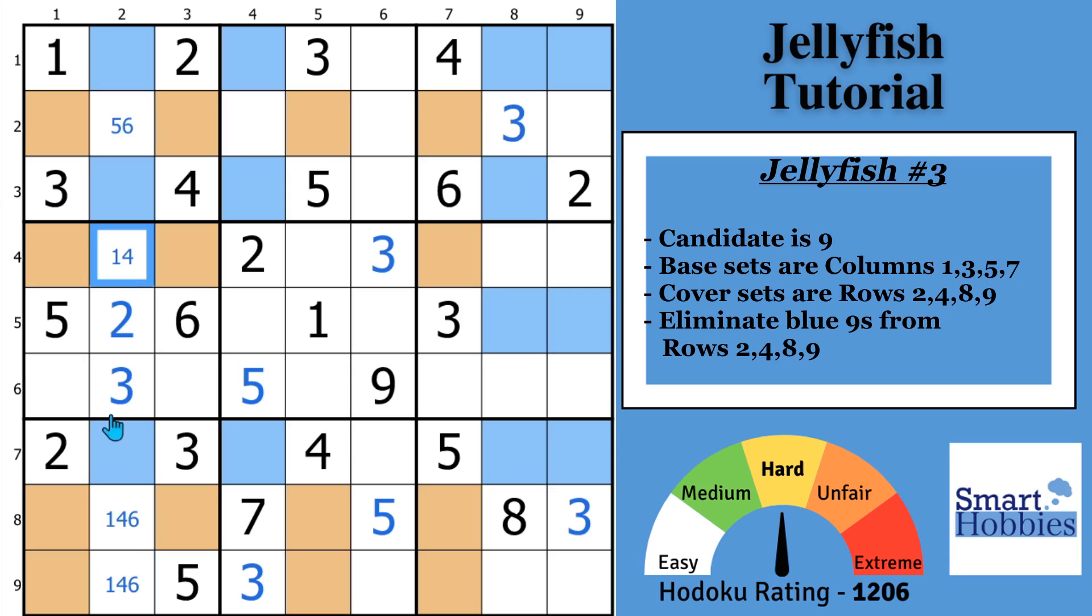And what you might notice is now what you end up with is a 1, 4, 6 naked triple with these 3 cells. We removed all those 7s, 8s, and 9s. And since this is a 1, 4, 6, the 1, 4, 6 can only be in those 3 cells in the column. So you can remove the 6 from right here and solve this cell for a 5.